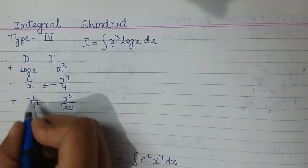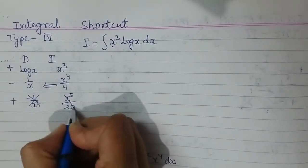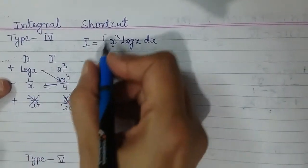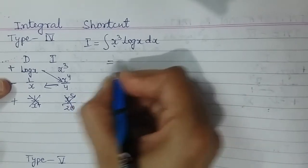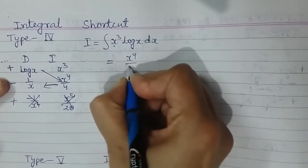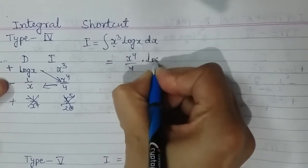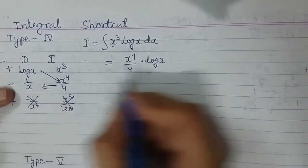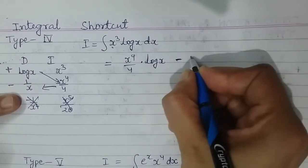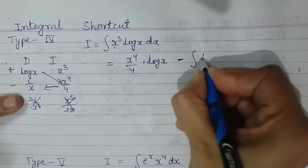This is not required because I am stopping there. So the trick method is I will do cross multiply. The value of this integral becomes, I will be multiplying these two: x power 4 upon 4 into log x.